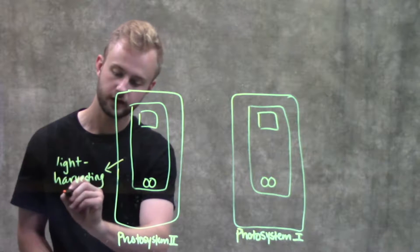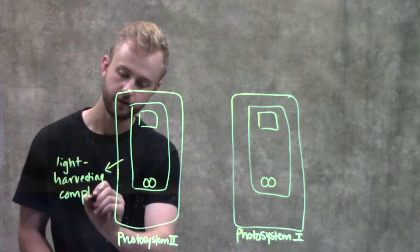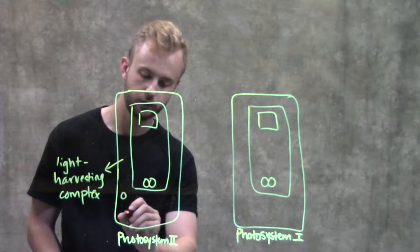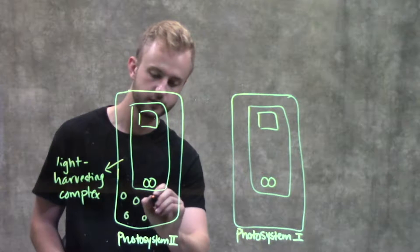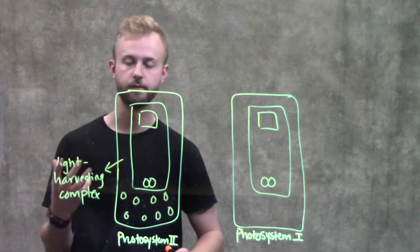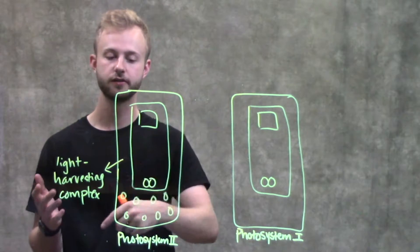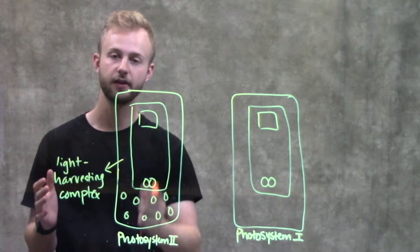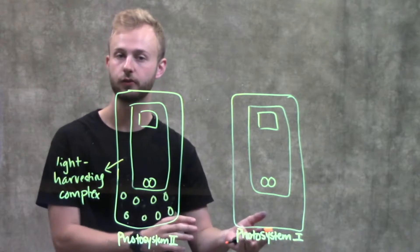In the light harvesting complex is where we're going to have all of our chlorophyll molecules because these molecules will be able to capture photons from the sun and excite their electrons. And then as those electrons fall back down, they'll pass that photon on to the next chlorophyll molecule.